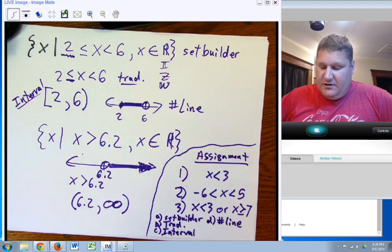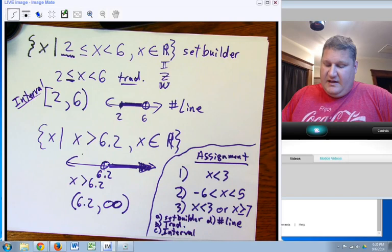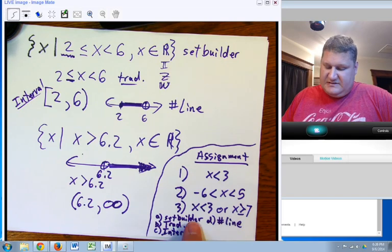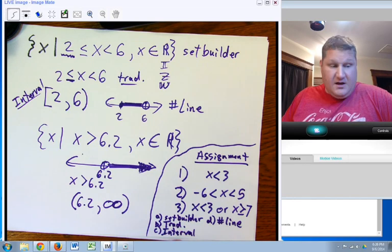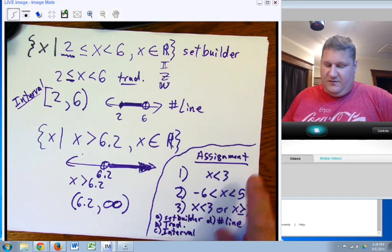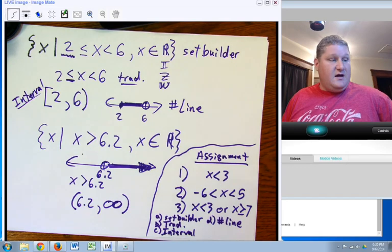Okay. You only have three little problems for this particular module. And it is to do those three problems. But for each of those three problems, I want set builder notation, traditional notation, hint, hint. I've kind of already given it to you. Interval and a number line for those three problems. Okay. Pause the video,